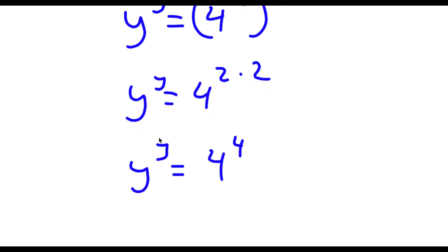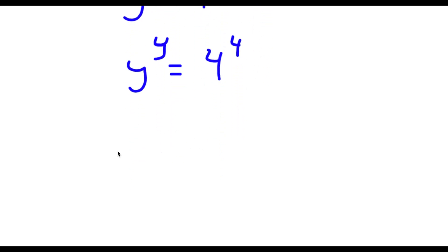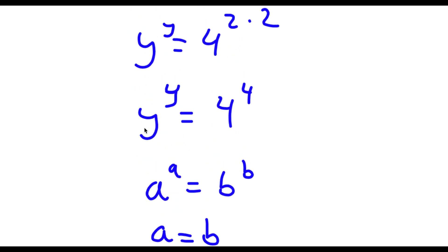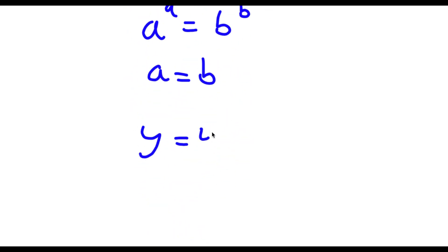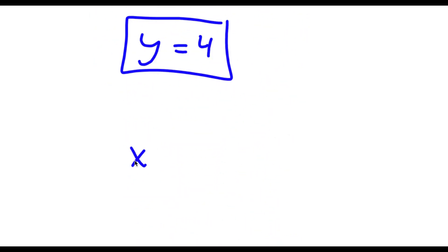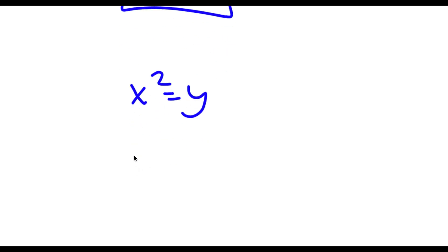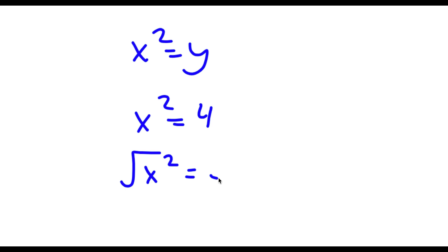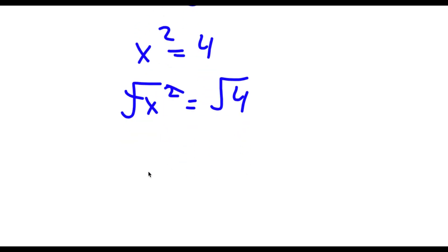Now if I have something in the form a to the power of a is equal to b to the power of b, then this means that a is equal to b. So in this case y is equal to 4. However, remember we're solving for x — x squared equals y and y equals 4, so x squared equals 4. Taking the square root on both sides, x is equal to positive or negative 2. So this is my answer.